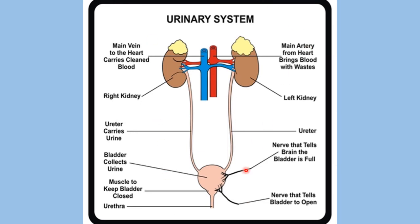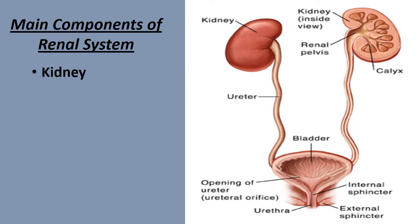In the urinary system, we have the urethra, which is the opening, and the urinary bladder. There are different components, but we are going to focus on the main components and main functions of the kidney — the renal system. The main components of the kidney include the kidney itself, two bean-shaped kidneys, the renal pelvis structure which starts from the ureter and forms a cup or bean shape overall. It involves different structures like the calyx, and there are nephron structures present, which contain blood vessels.